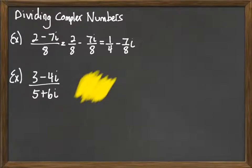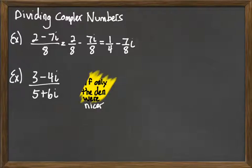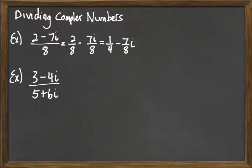And so we just start thinking about that. And then we say to ourselves, if only the denominator were nicer, we'd be okay. But the denominator's not nice. But if you remember from the last video, when you multiply a complex number times its conjugate, that turns it into a real number. And so what we're actually going to do is multiply both the top and bottom by the conjugate of that 5 plus 6i.